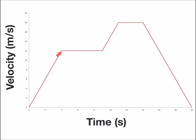The second segment increases in time yet velocity remains constant, so there will be no acceleration because there's no change in velocity. The third segment will also have a positive constant acceleration. The fourth segment is horizontal so we will have no change in velocity, therefore no acceleration. And the fifth segment is decreasing in velocity, so therefore we're going to have a negative acceleration — the object will be slowing down and eventually come to a stop.